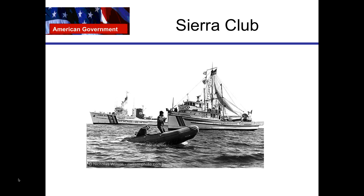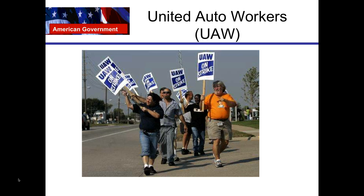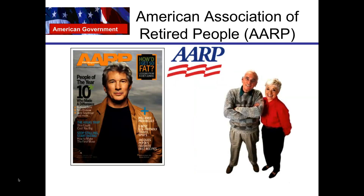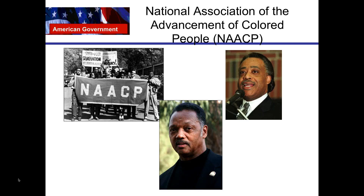Looking at some examples: the Sierra Club advocates for environmental issues. United Auto Workers advocates for labor issues. The American Civil Liberties Union advocates for civil liberties. The American Association of Retired People advocates for the elderly. The NAACP generally advances African American issues. At the bottom we have Reverend Jesse Jackson, and to the right you have Reverend Al Sharpton — two past and present leaders of that movement.